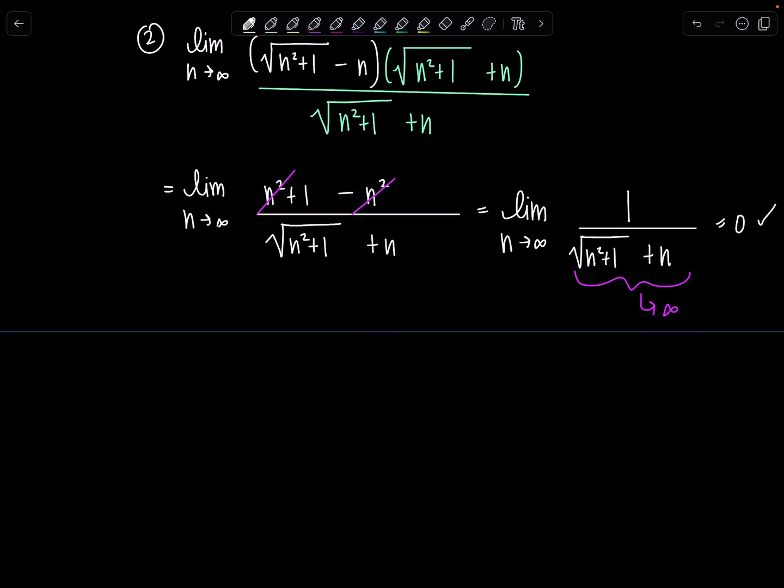So since both conditions are satisfied, then I can say that the sum n equals 1 to infinity, negative 1 to the n, times the square root of n squared plus 1 minus n, does converge by the alternating series test, AST.